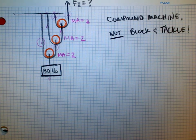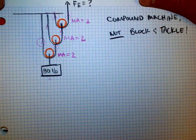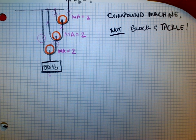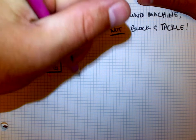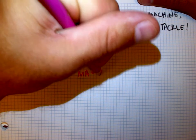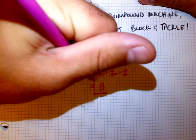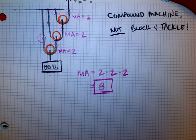So what do I do? Well, with a compound machine, with multiple simple machines put together, even if they're all pulleys, the same type of machine, I take the three mechanical advantages and I multiply them together. So the total mechanical advantage would be two times two times two, a total mechanical advantage of eight.